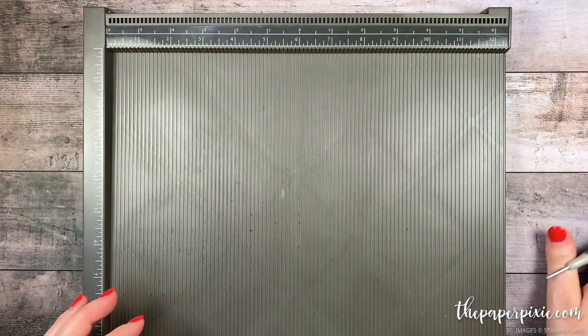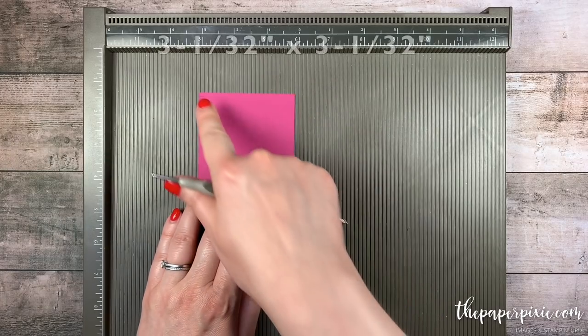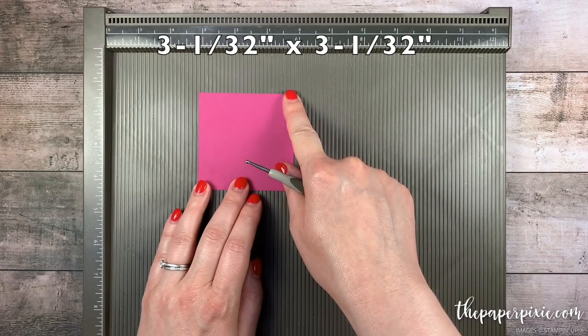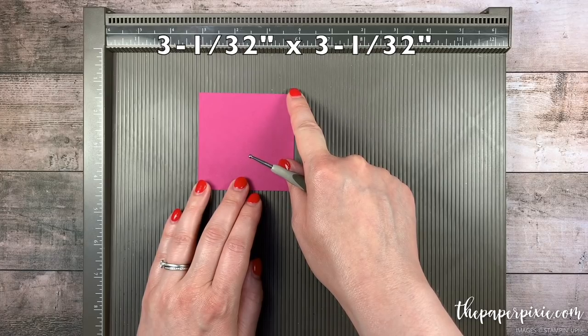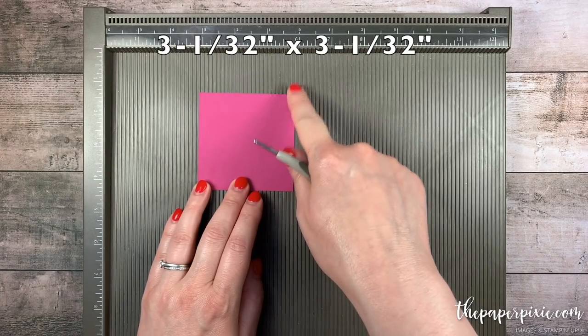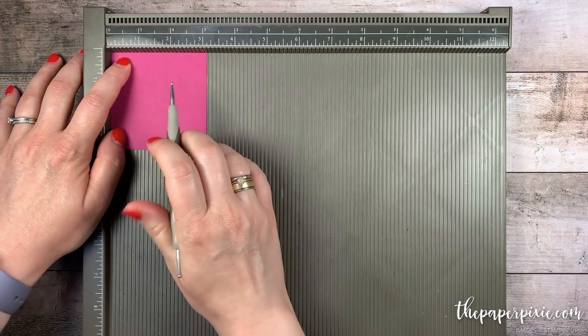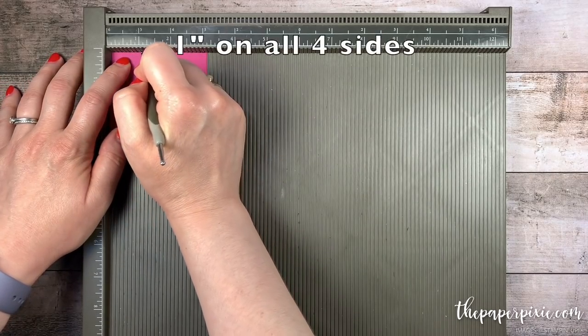I'll put that piece to the side. I have another piece of Berry Burst that measures three and just a hair, so not quite three and a sixteenth, about three and a thirty-second. So three and a hair by three and a hair and we're gonna score this on all four sides at one inch.